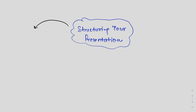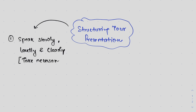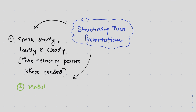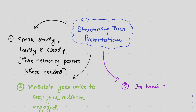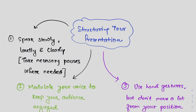There are four items that you should keep in mind while trying to improve your presentation skills. Number one is to speak slowly, loudly, clearly, and take occasional pauses to make it more impactful. Number two is to modulate your voice so the audience does not get bored. Number three is to use hand gestures. And number four is to maintain eye contact and remain calm even in heated arguments.